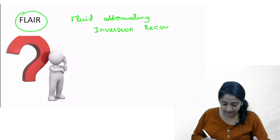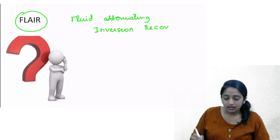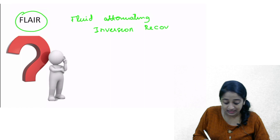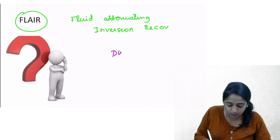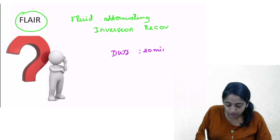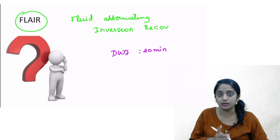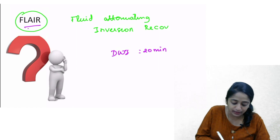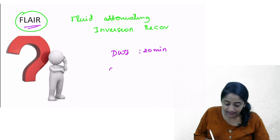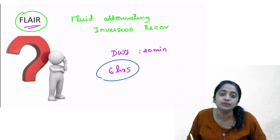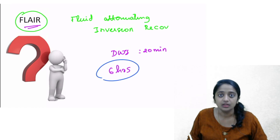In the previous lecture, we saw that the first change detected in acute infarct is on diffusion-weighted images, as early as 20 minutes. So the next question is: when will you get a change in the FLAIR sequence? It requires a minimum of six hours to detect changes in acute infarct on FLAIR.